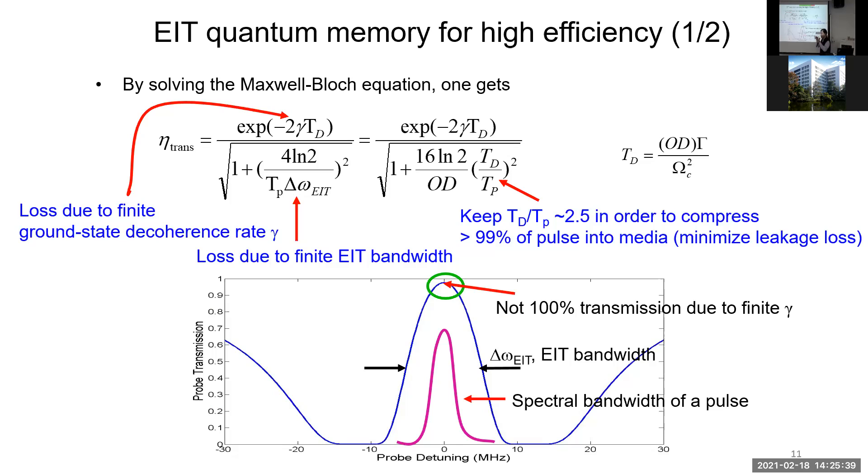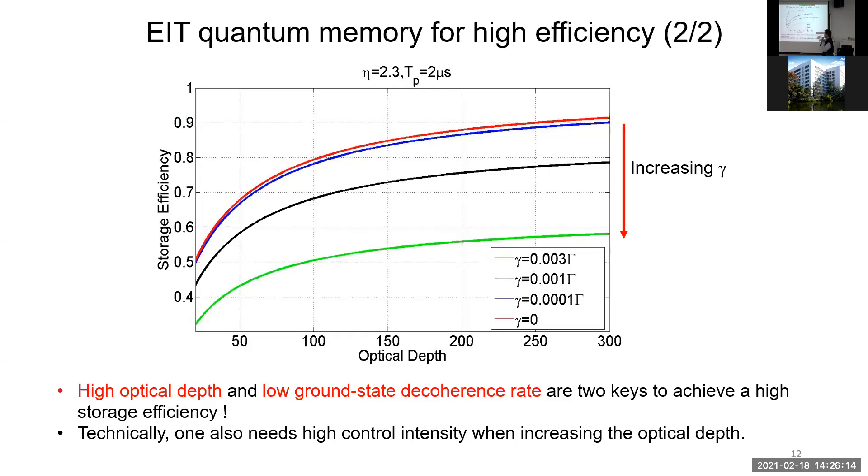However, there is another consideration. When you want to store almost the whole probe pulse into the media, you need to keep the group delay time small enough to the probe pulse duration to a certain effective value, such that almost the whole probe pulse will be compressed into the media to minimize the leakage loss. So based on these three relations, you can obtain high storage efficiency. We apply that formula versus optical depth and the storage efficiency versus optical depth. Optical depth is an important factor. It's proportional to the atom densities times sample length times absorption cross section. And eventually there are two parameters that are very crucial to obtain high efficiency: high optical depth and low ground state decoherence.